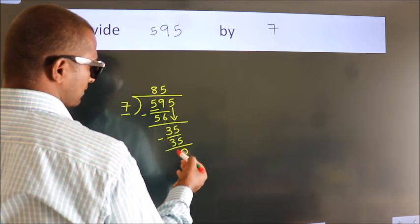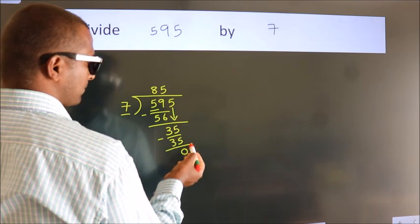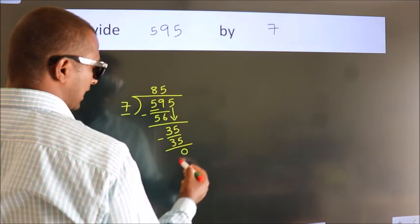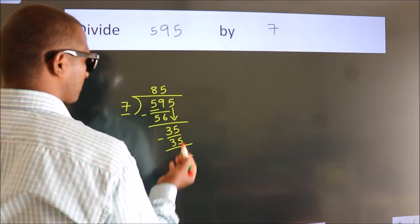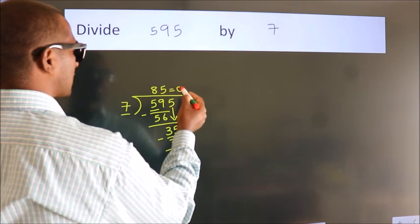After this, no more numbers to bring down. We got remainder 0, so this is our quotient.